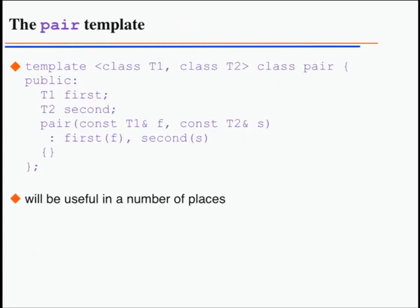What will be needed is the pair template. The pair is a very simple but useful class — it consists of two members called first and second, templated on the types of those two members. One simple example where it's useful is if you have a function that should return two values, then you just return a pair.